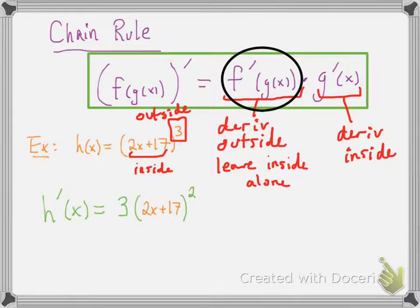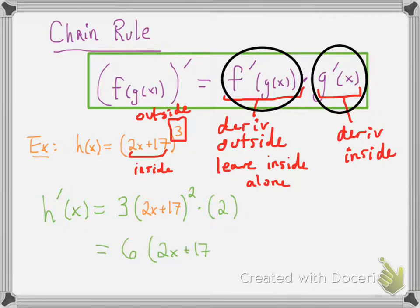The next step is to multiply by the derivative of the inside piece. The derivative of 2x plus 17 is 2, so we multiply by 2. If you want to simplify, 3 times 2 is 6. But you can't bring that 6 inside the parentheses because those parentheses are squared, so be careful of that.